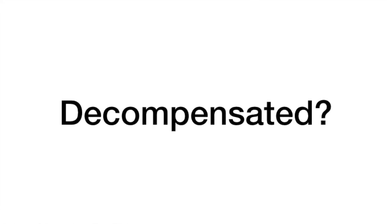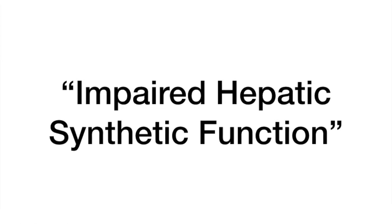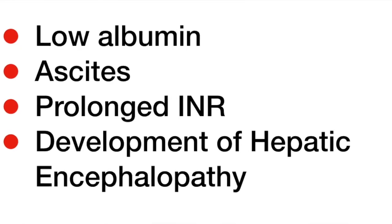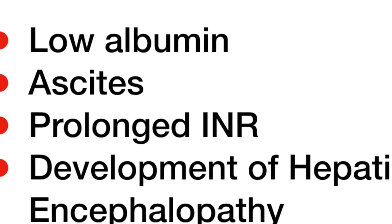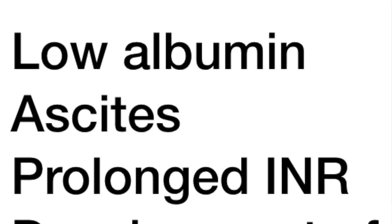The first question I want to pose is: what exactly is decompensated cirrhosis? Generally speaking, when we talk amongst ourselves, we are talking about some impairment in the hepatic synthetic function of the liver, keeping in mind that the liver makes things — it makes clotting factors, it makes albumin. The major laboratory areas you want to look at include a low serum albumin, the development of ascites, a prolonged prothrombin time, and the development of hepatic encephalopathy.